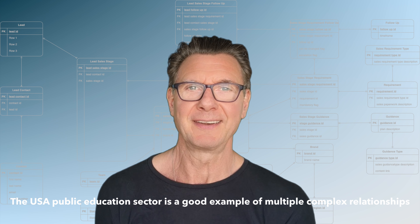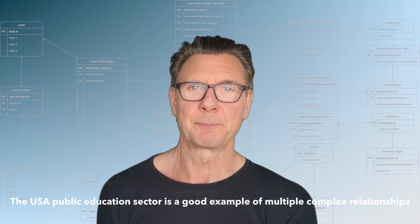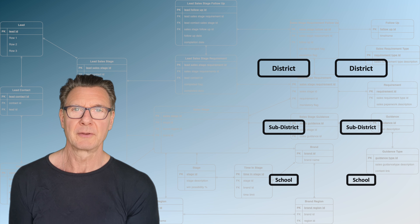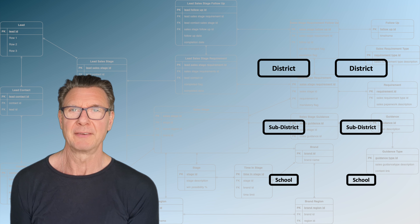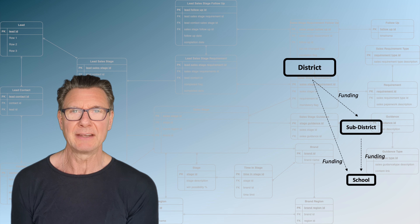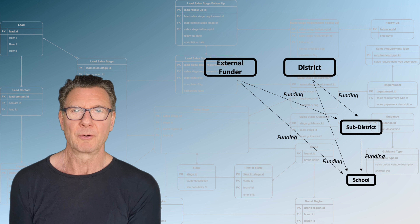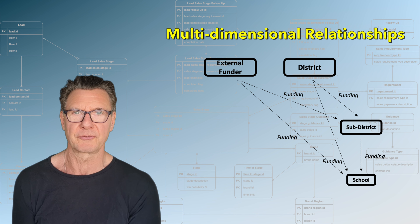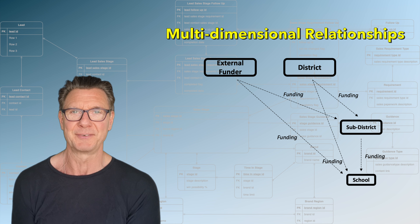A good example is a funding model in the United States public school system, where you have schools, sub-districts, and districts. Schools can receive funding from both a sub-district and a district. And in addition, there are additional organizations that are providing funding to schools, creating a multi-dimensional relationship between schools, sub-districts, districts, and other external funding providers.